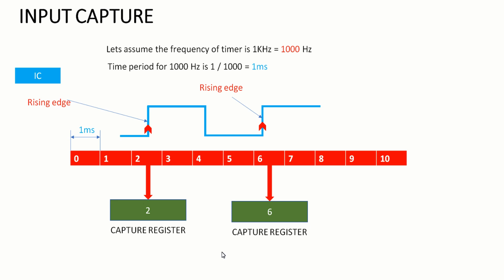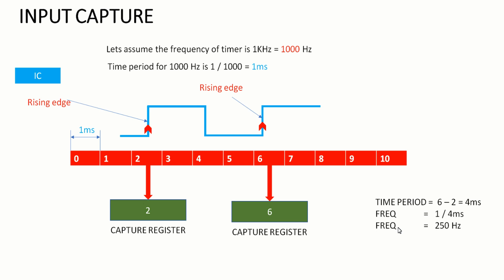Now let's see how we can find the frequency of this blue color pulse using those two values. The time taken for one count is 1 millisecond, the inverse of 1000 Hz. The time period of the wave is given by subtracting the two capture values: 6 minus 2 equals 4 counts, which represents 4 milliseconds — that is one full pulse cycle with T-on and T-off. The frequency is therefore 1 divided by 4 milliseconds, which equals 250 Hz.